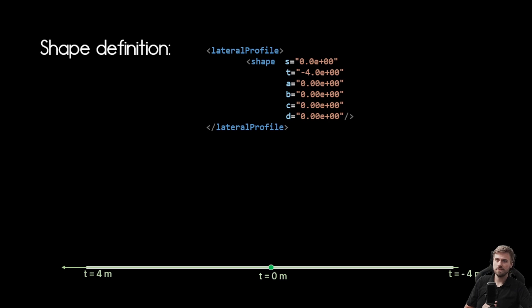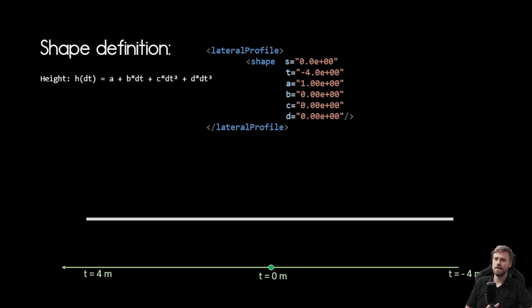So the shape element is defined by six attributes and that is the S coordinate which defines at what S position this shape is valid. Then we have the T coordinate that tells us from what T coordinate that shape is valid from. So in that case we have T minus 4 and then we have the parameters A, B, C and D that are part of our well-known and loved third order polynomial we have in OpenDrive. So for example if you want to apply a constant height to our shape then we can do so by changing the parameter A in our third order polynomial you can see up here. And this is going to be the result.